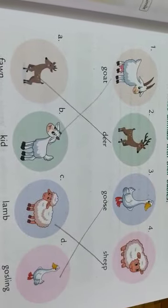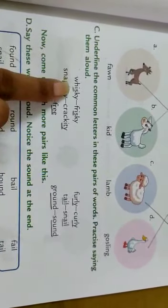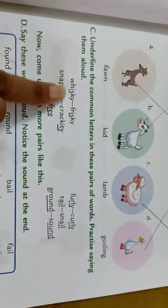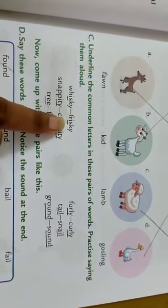Here we have learnt about animals and babies. This was the exercise which we have done in this. We have done this common letters also, like whiskey, frisky. In both these things, in both the words, IS is common.